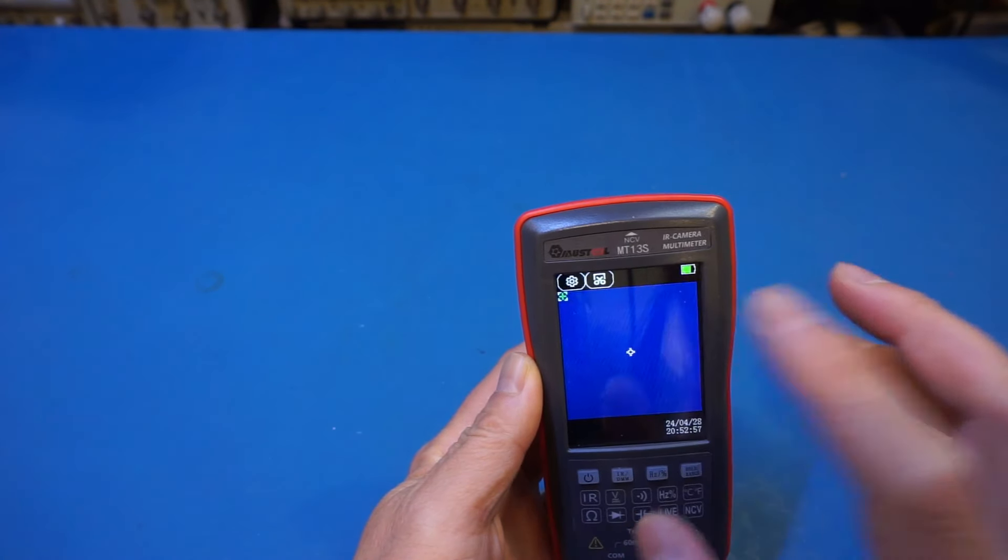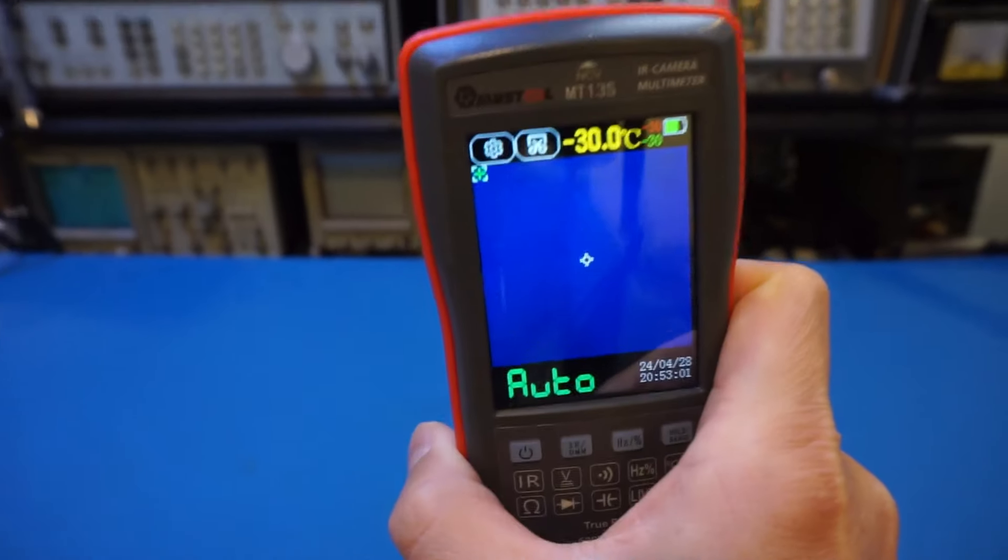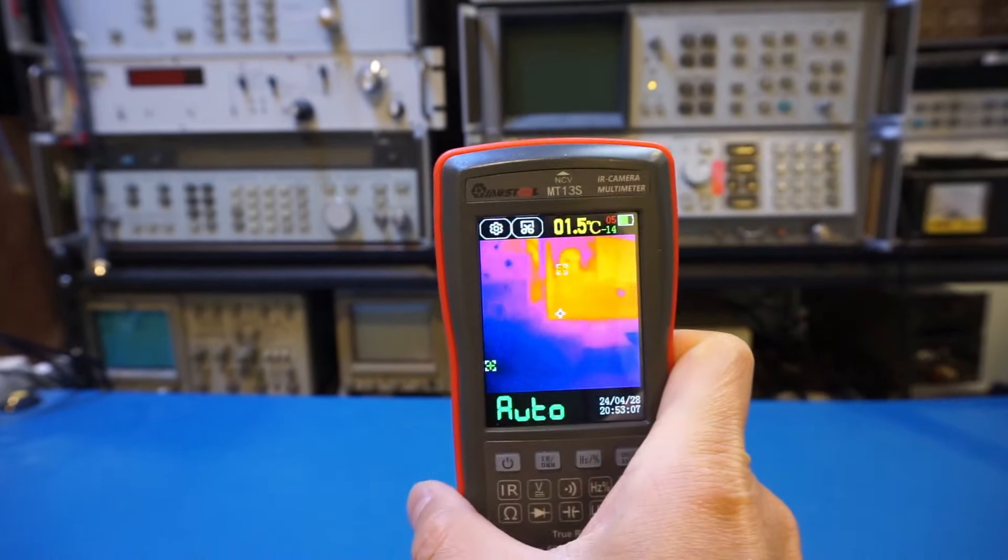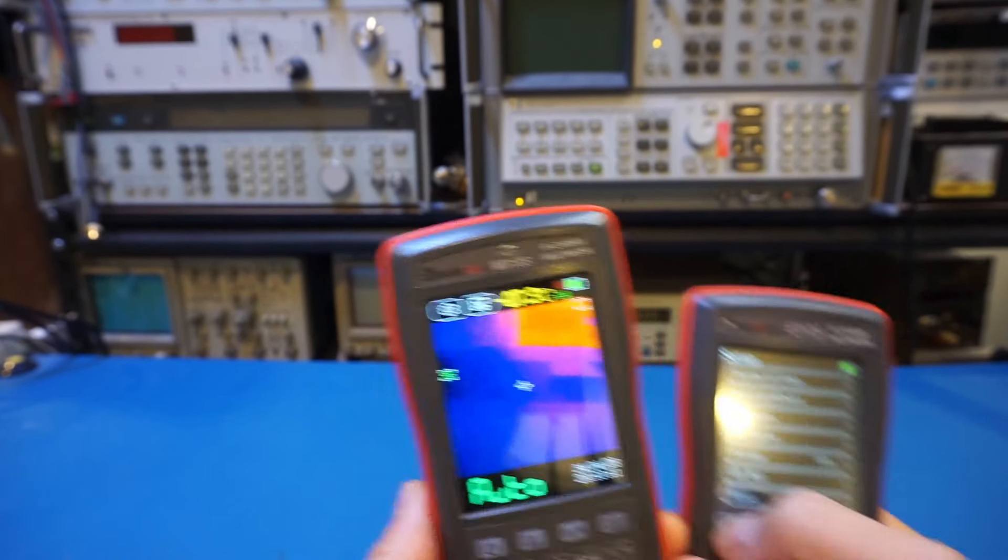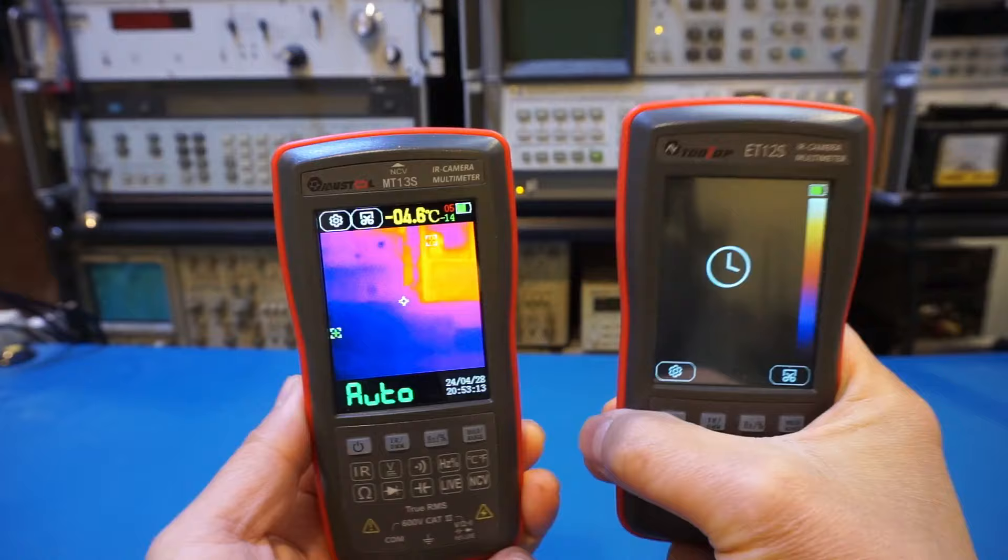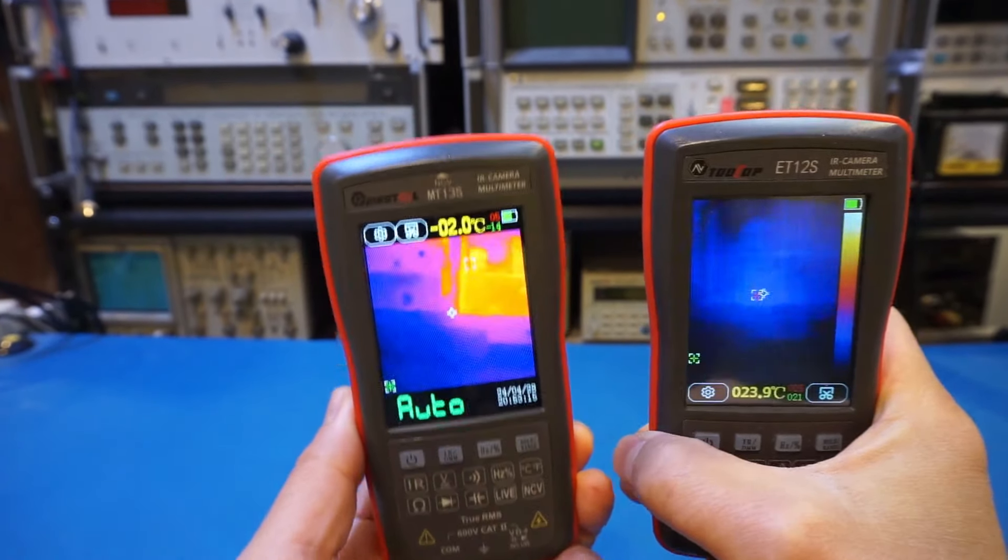So the thermal camera does take a few seconds, as you can see here. Let's take a look at the background. Now you can see a lot more details. In my opinion, the thermal camera is a huge improvement compared to the older version. As you can see here, not only the resolution is higher, but also the image quality is much better.